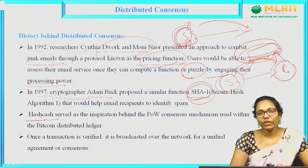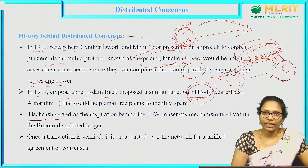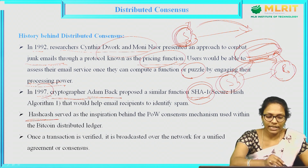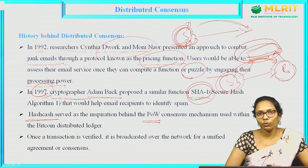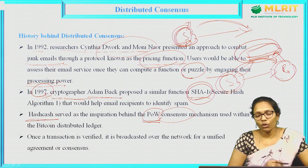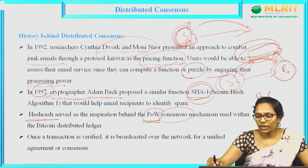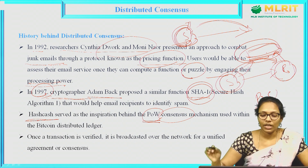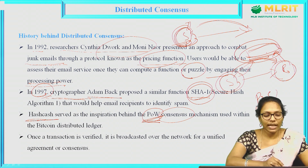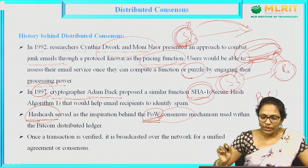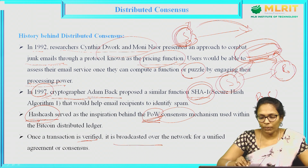The similar thing we are using in consensus also. In consensus, we are giving a mathematical puzzle to the nodes or the miners. Whoever solves the puzzle, they are going to validate the transaction — they are eligible to validate the transaction. This HashCash mechanism, introduced by Adam Back in 1997, was the foundation behind Proof of Work — that is the POW consensus protocol. Once the transaction is validated or verified, that transaction will be broadcasted to the network.